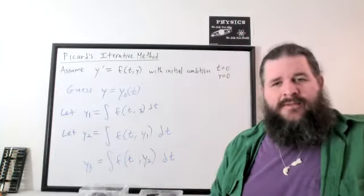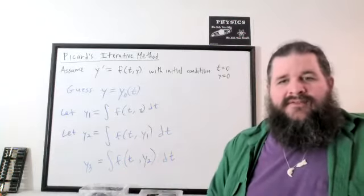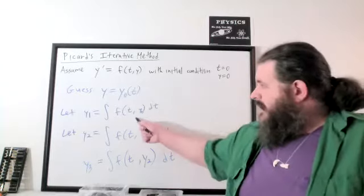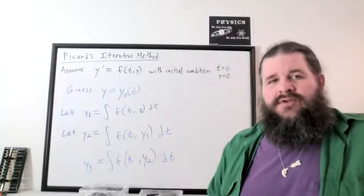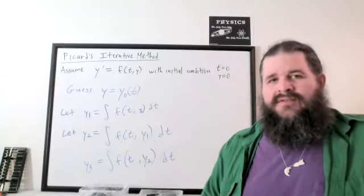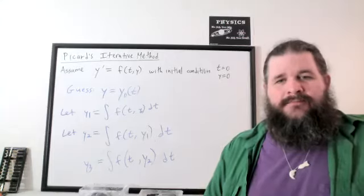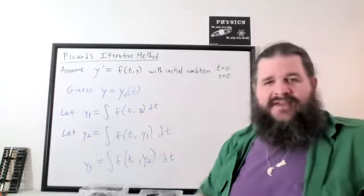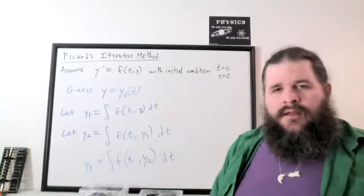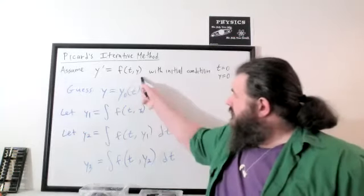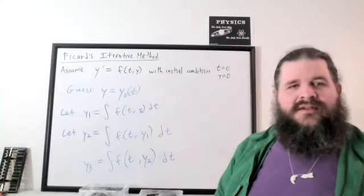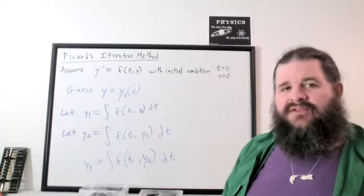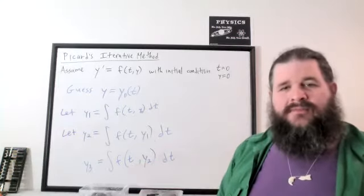If you stop that process at some point, say y-five, what you have is an approximation. We're not adding to the previous one — we're integrating what we had before. That integral often leads to reproducing what we had before plus one other term, but that arises naturally from taking the integral. Each step, we're integrating this function f applied to t and the previous guess to get our new guess. So technically it is a sequence, not a series, but the elements within that sequence will often be several things added together.